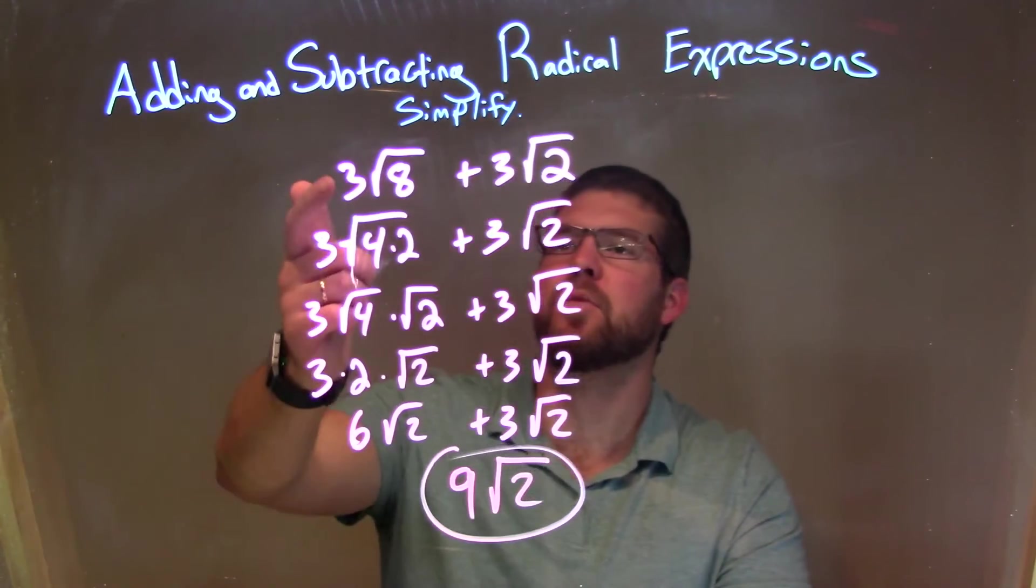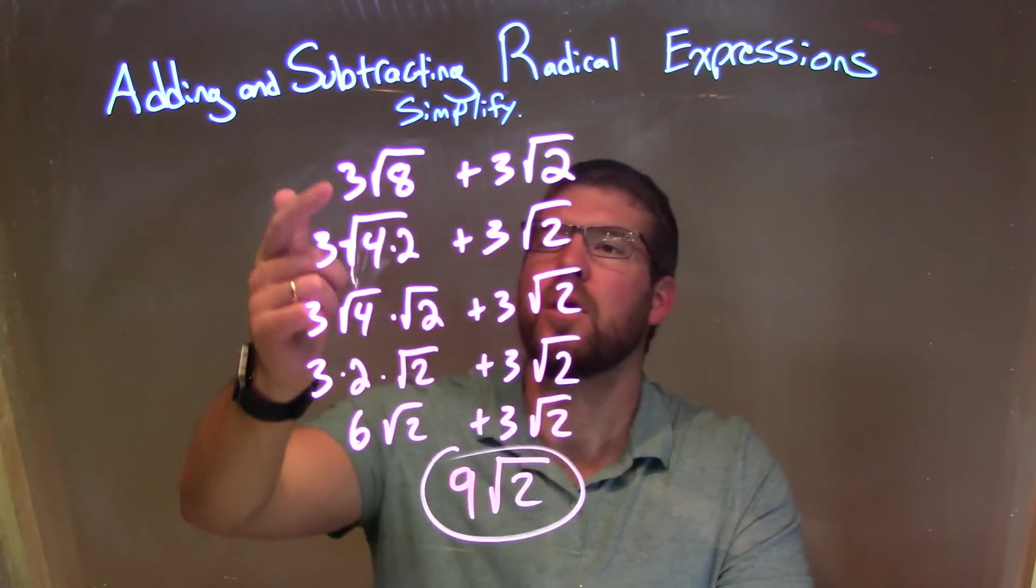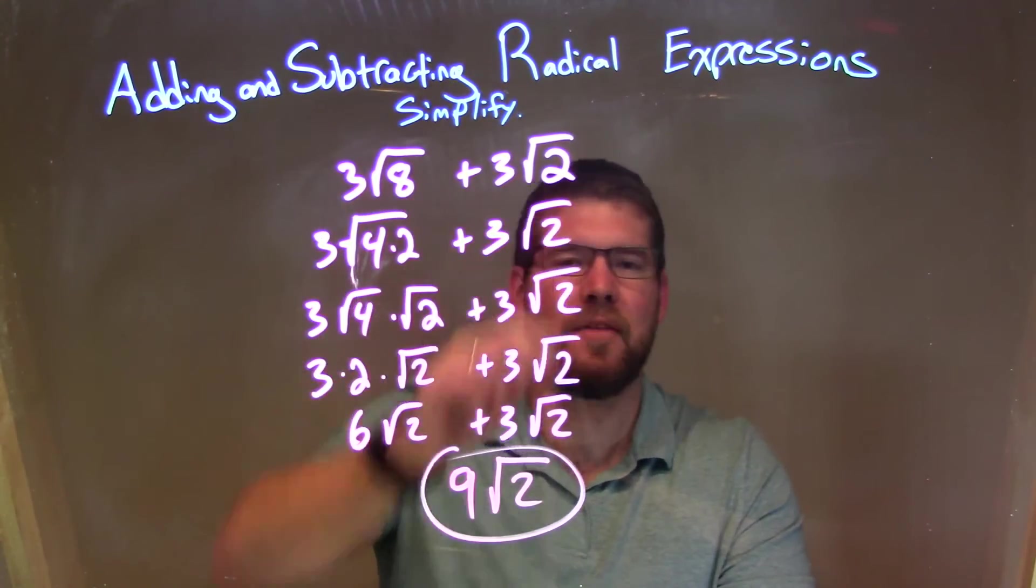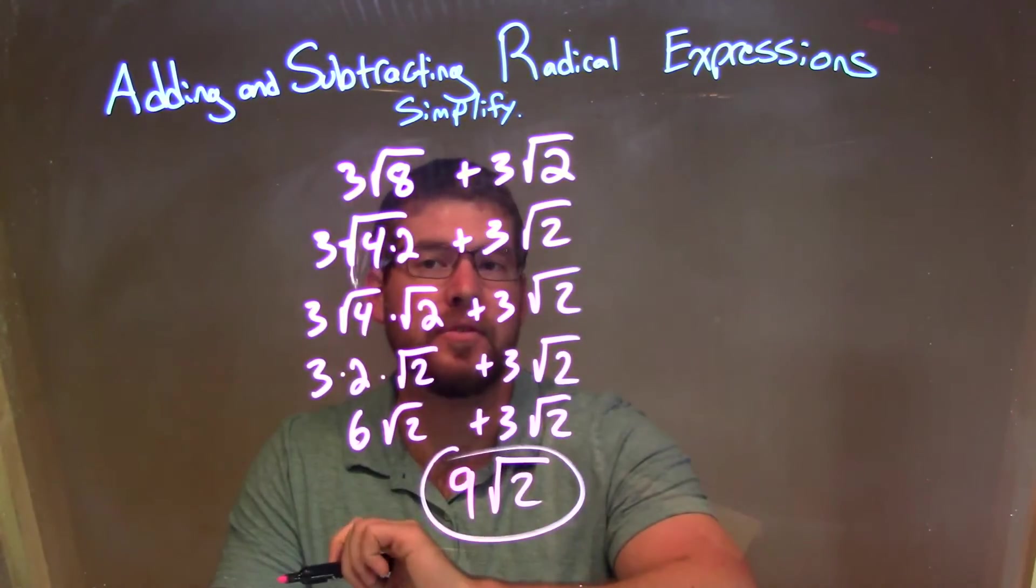So let's recap. We're given 3 times the square root of 8 plus 3 times the square root of 2. I want to break these apart so they have the same square root there. So how can I make 8 look like a 2? Well, it's 4 times 2.